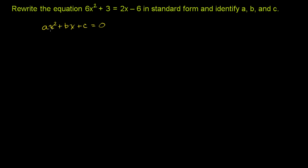And then we want to write them so that we have the x terms where their exponents are in decreasing order. So we have the x squared term, then the x term, and then the constant term.